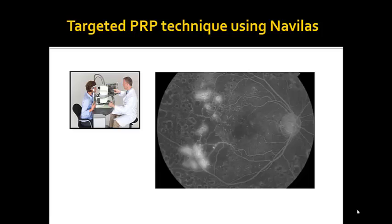A new and novel approach to targeted PRP is made possible by NAVALAS, a computer-guided laser photocoagulator and fundus imaging device manufactured by ODOS of Germany. NAVALAS eliminates many of the difficult obstacles encountered in standard PRP, using a unique camera-based delivery system.